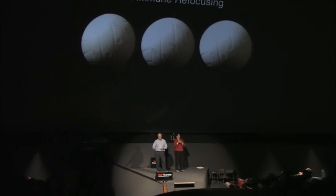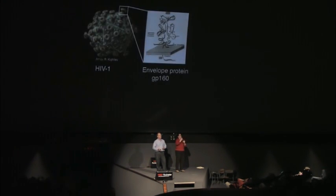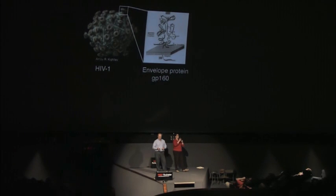I'm going to give three examples where we've tried to tone down these decoys, and the first one is HIV. This is a drawing of HIV—as you can see, it's coated with envelope protein. These are GP160s, and GP160 binds cells, and that's how you can start an infection.